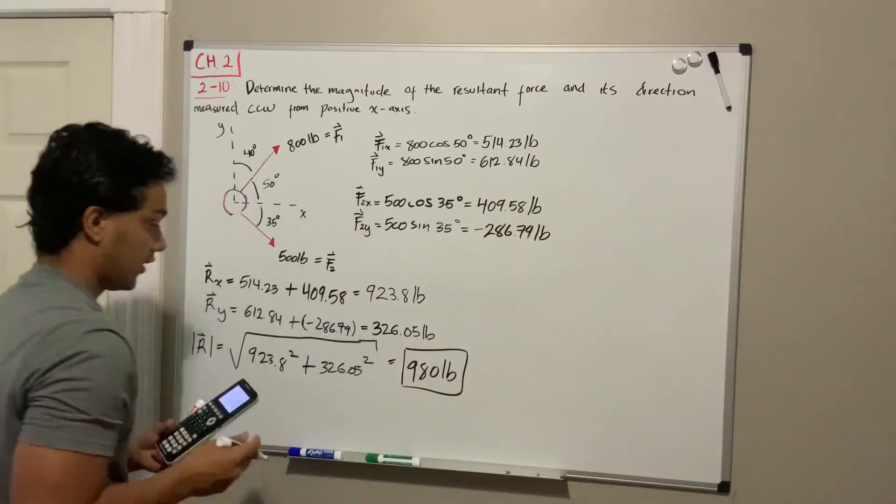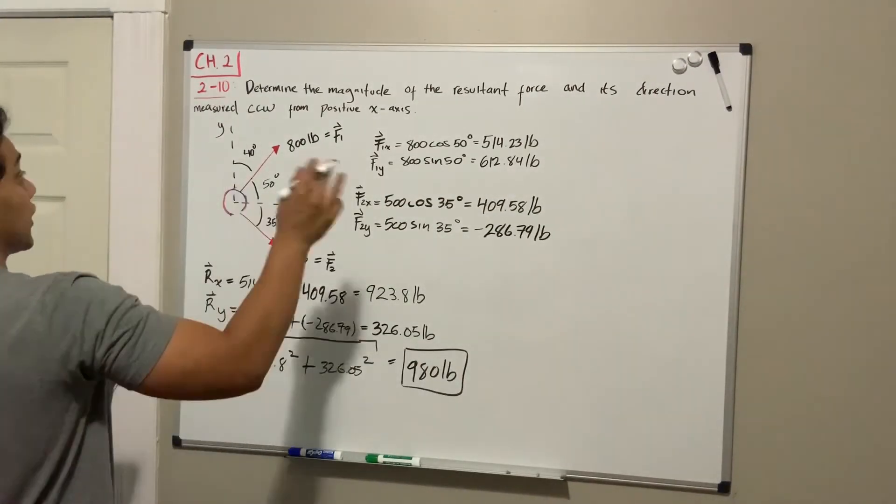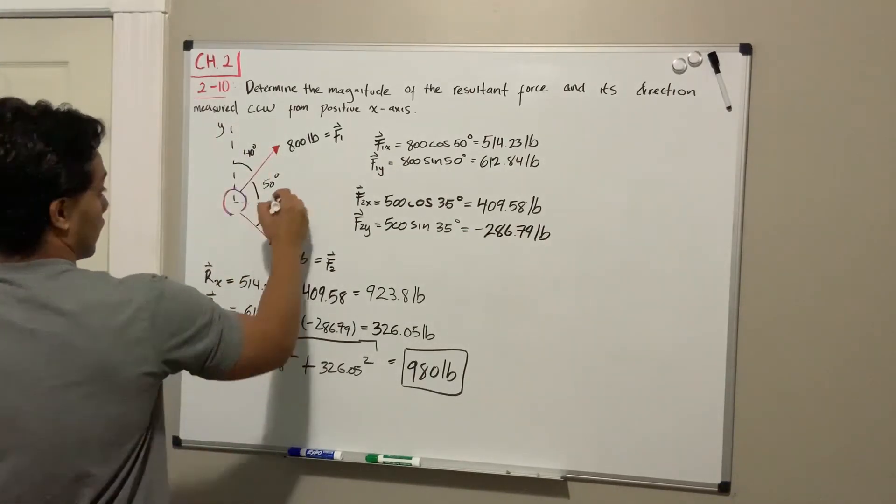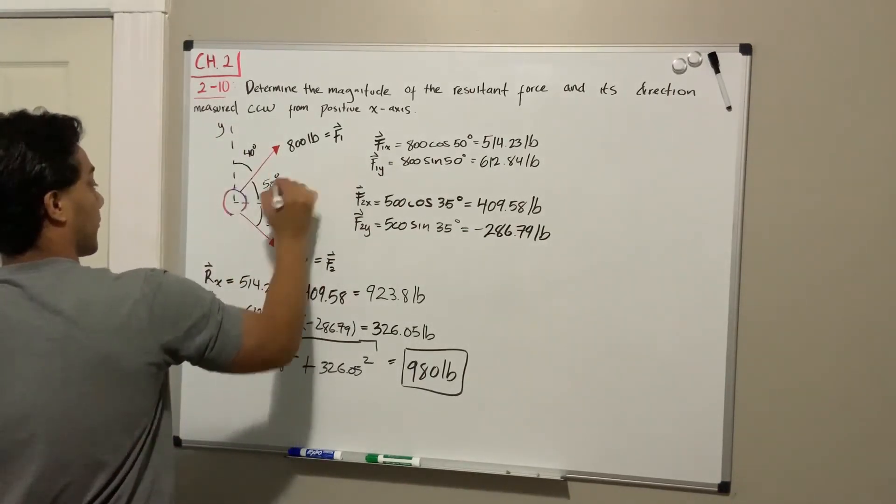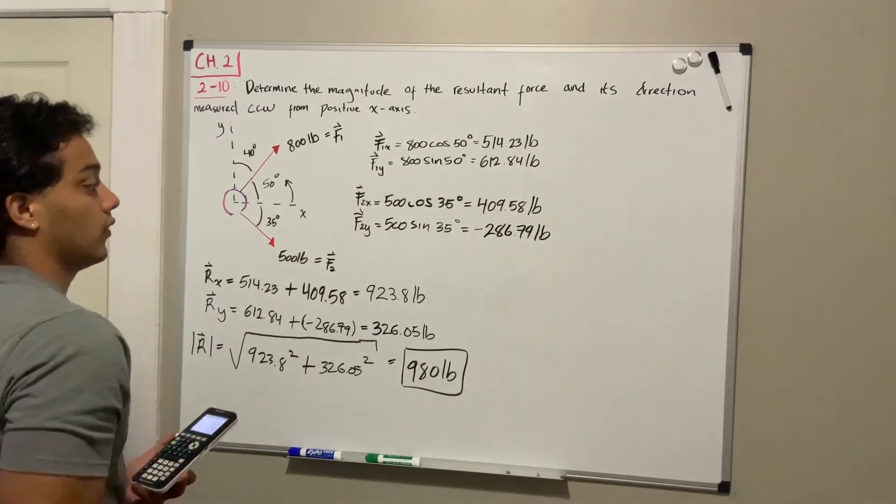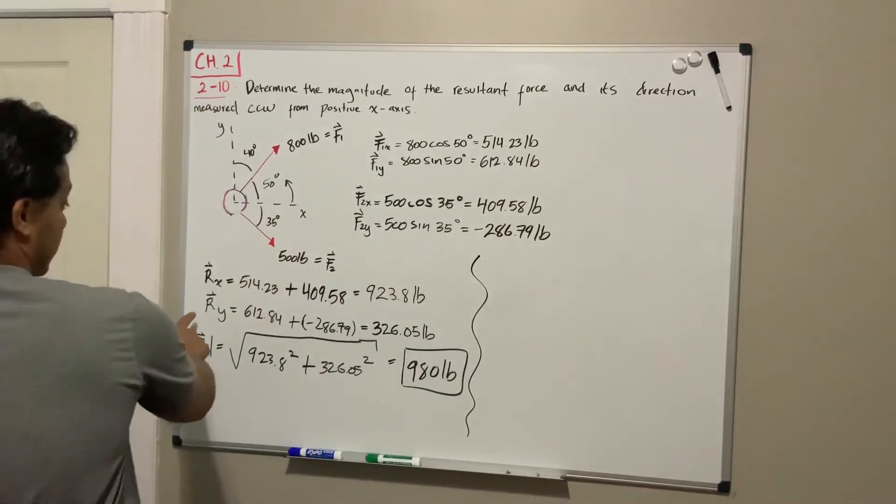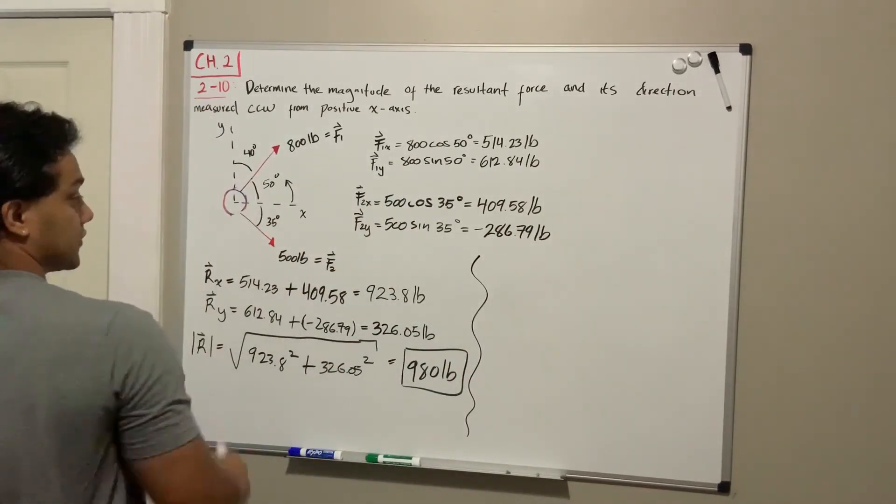And now we're left with its direction measured counterclockwise. How can we do that? Well we can use our tangent again because we have our y and our x values.